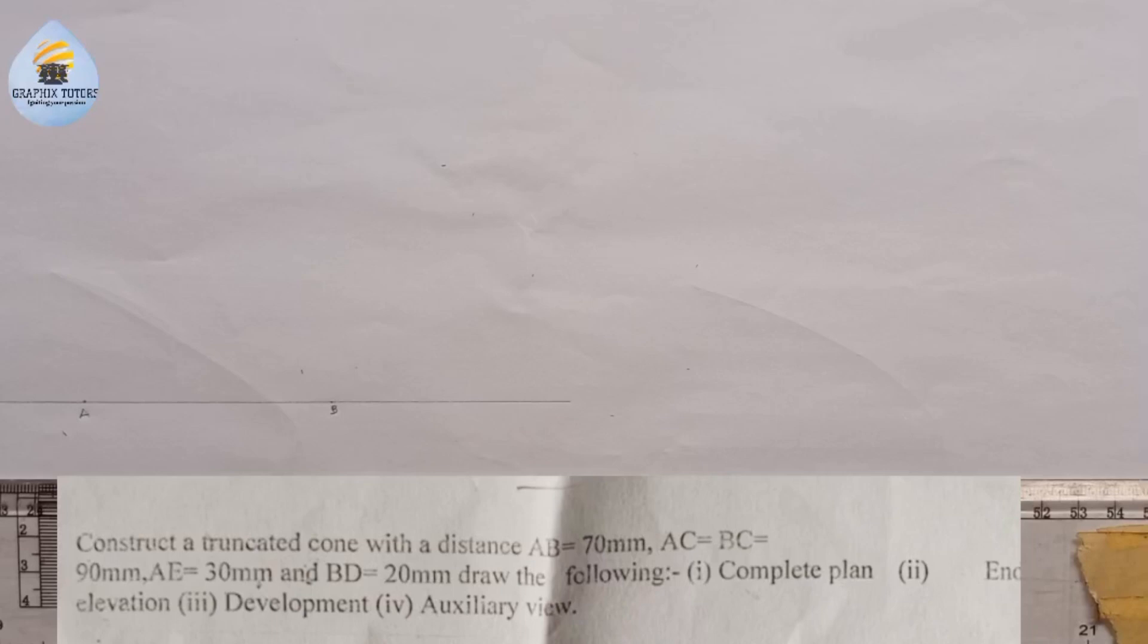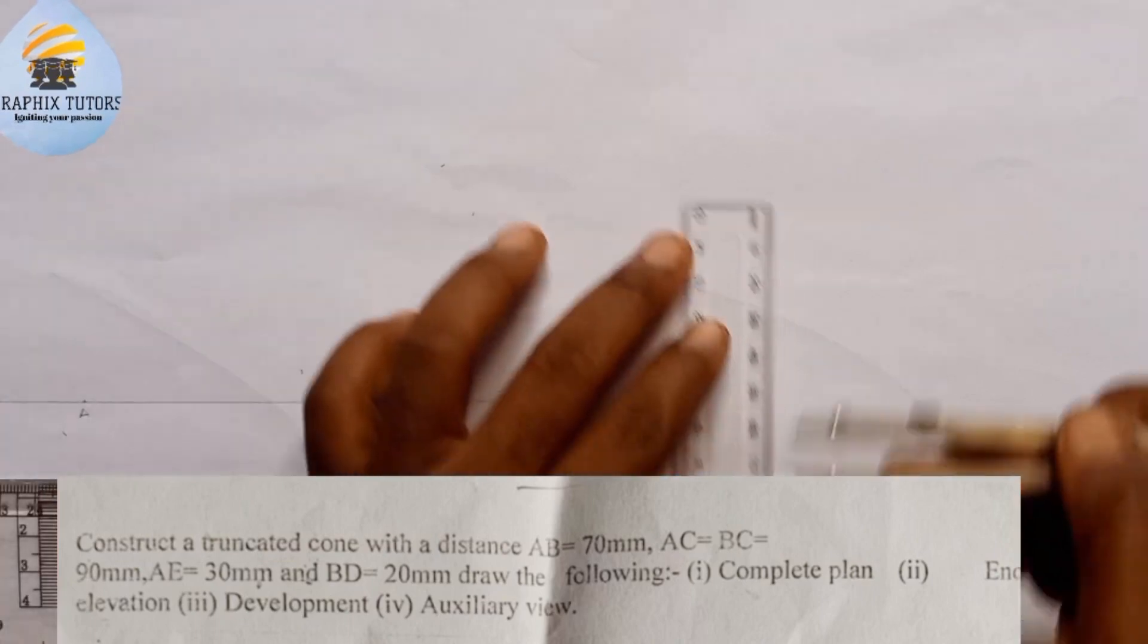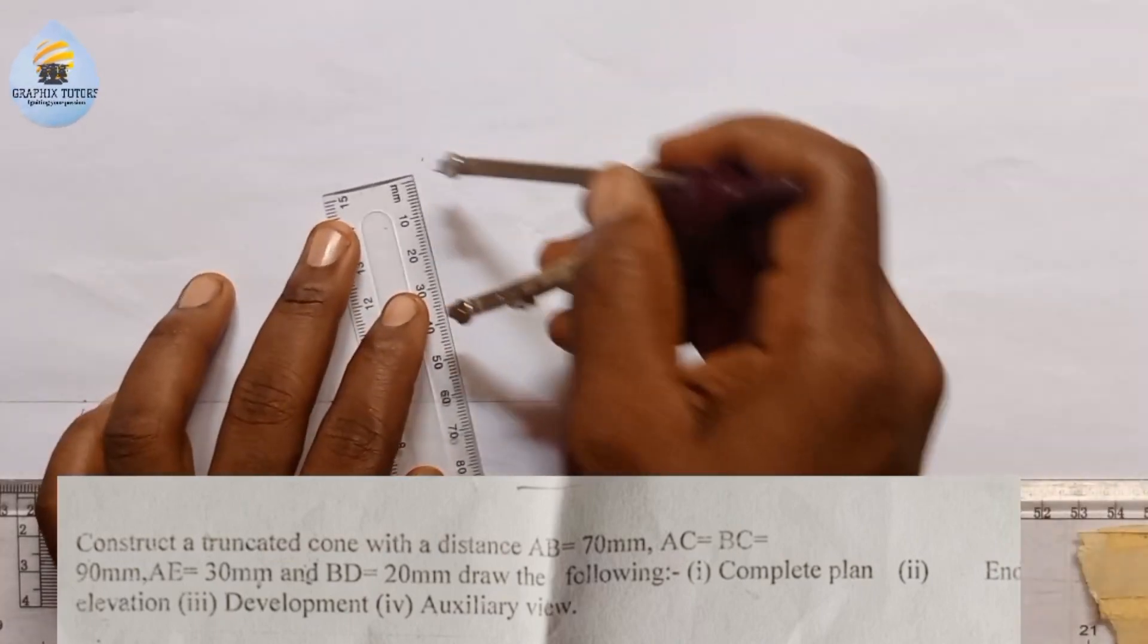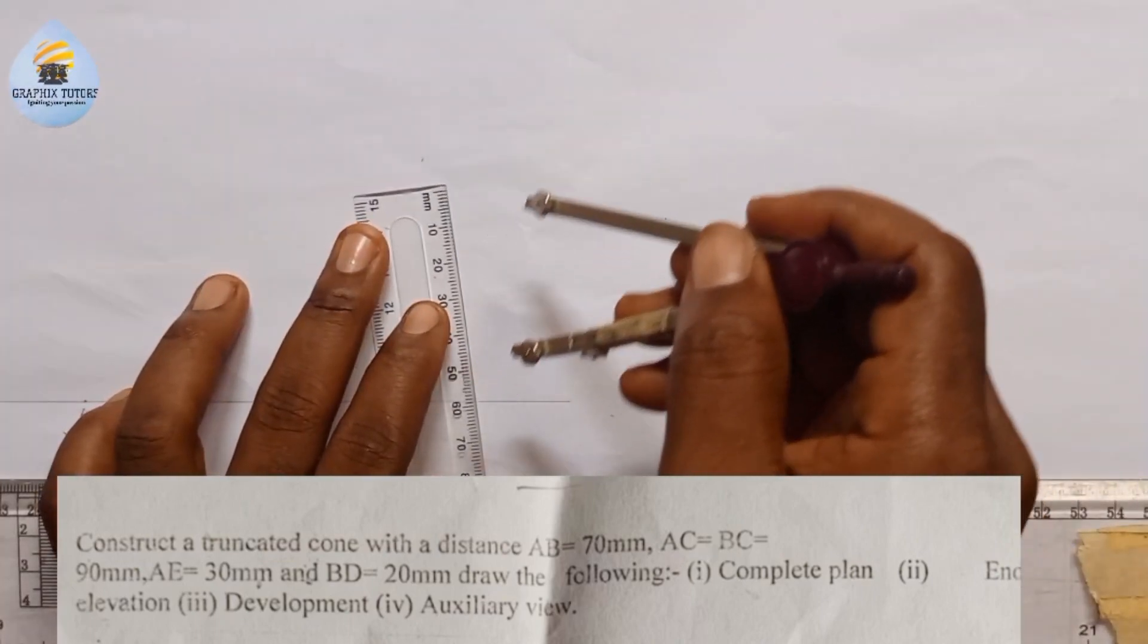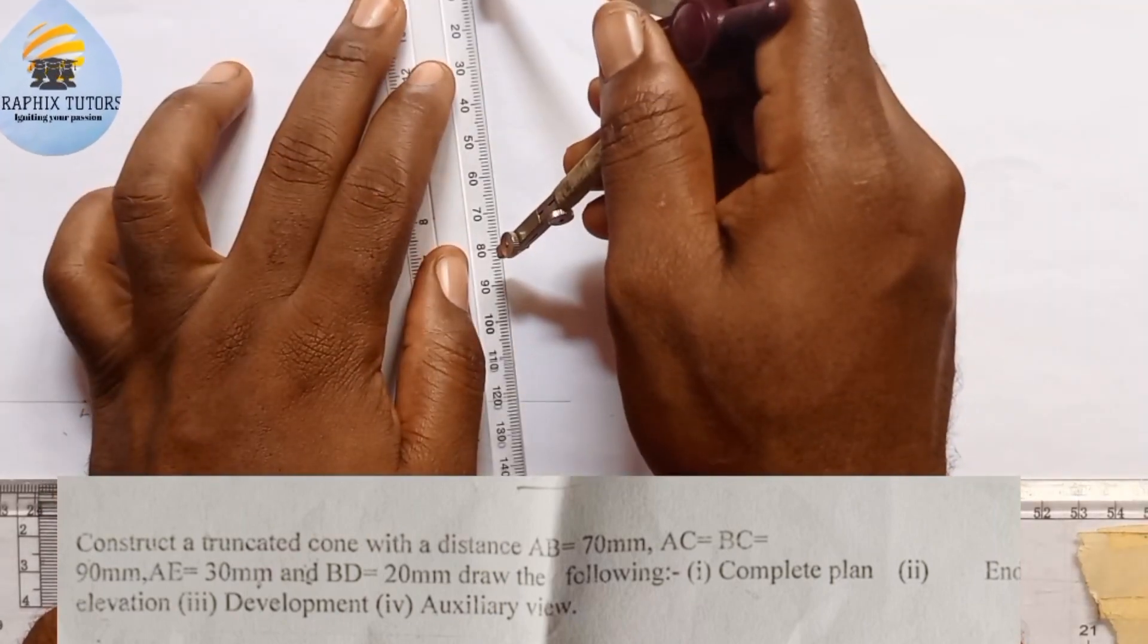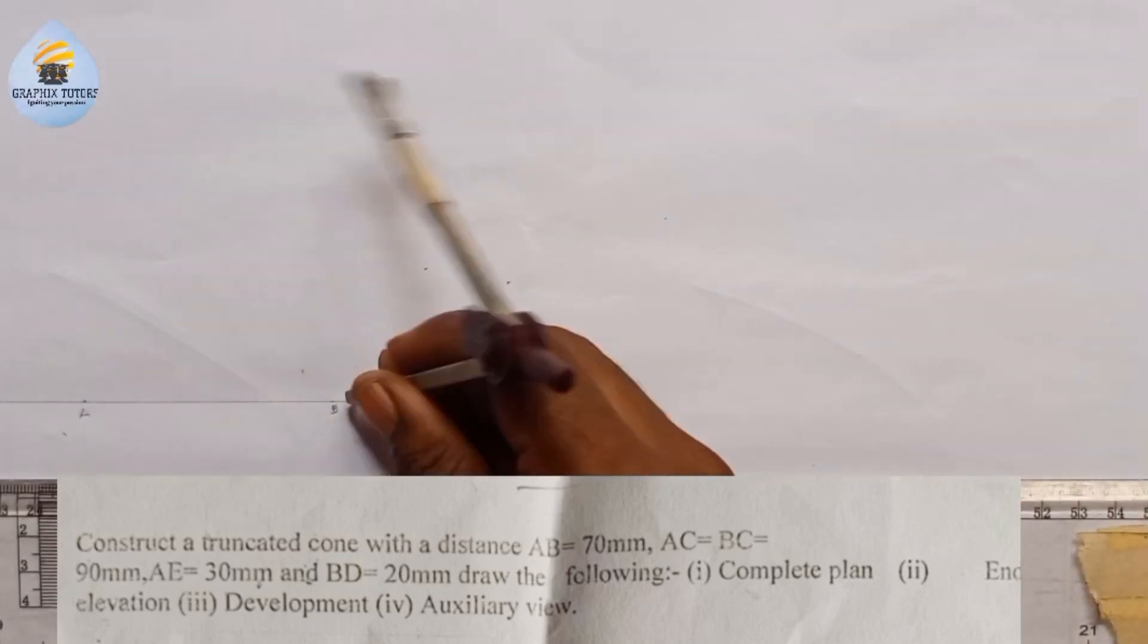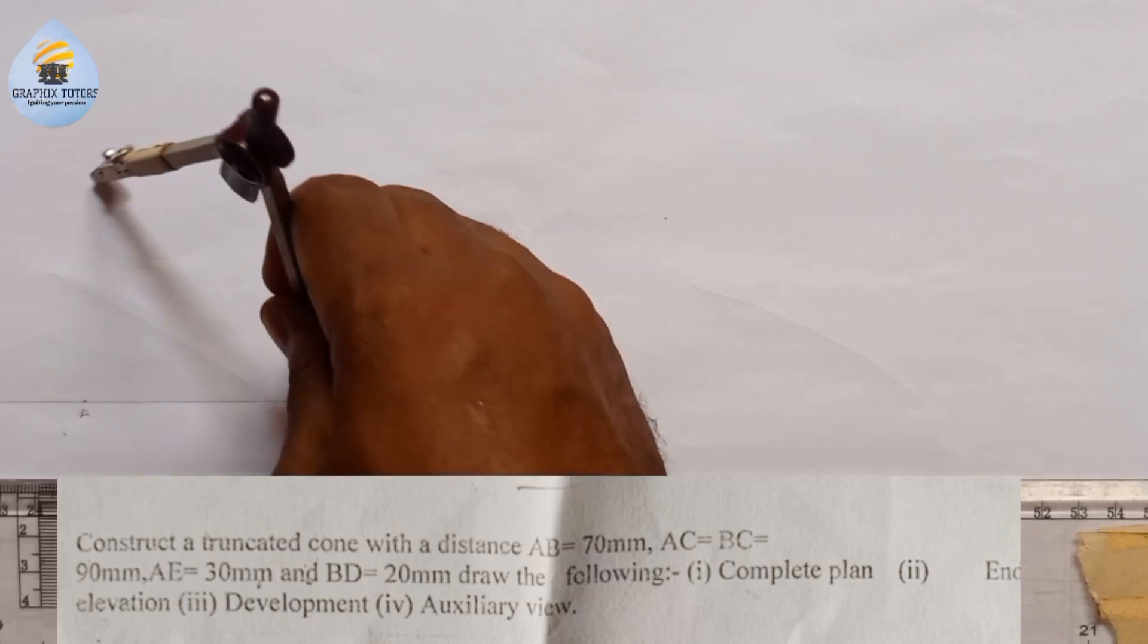Now the next thing we're told is that AC equals BC equals 90 millimeter. So AC, if the cone takes the form of a triangle, C is somewhere around here. We're told AC is 90 and BC is 90, so I'll measure 90 from my metal rule. I'm going to place it at this point and check an arc. I'll come here also and check an arc. Where they meet is my point C.